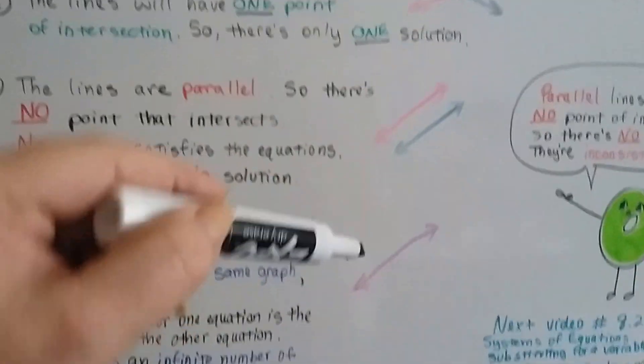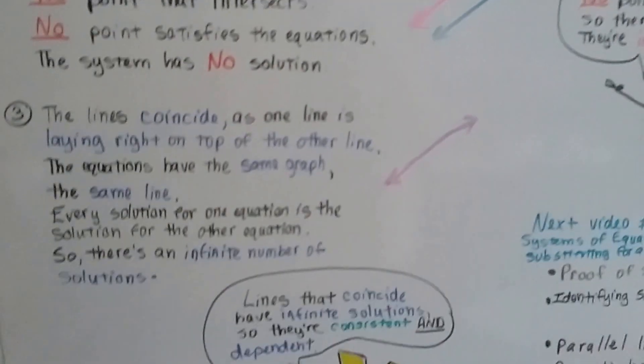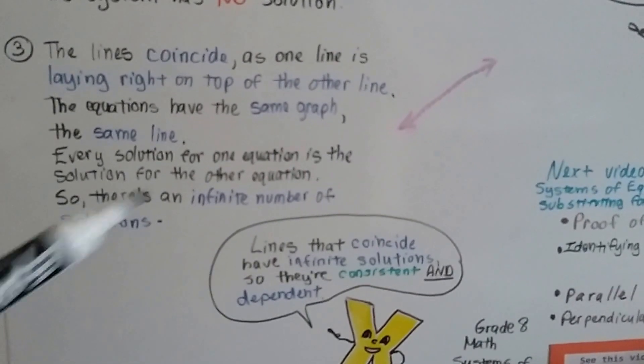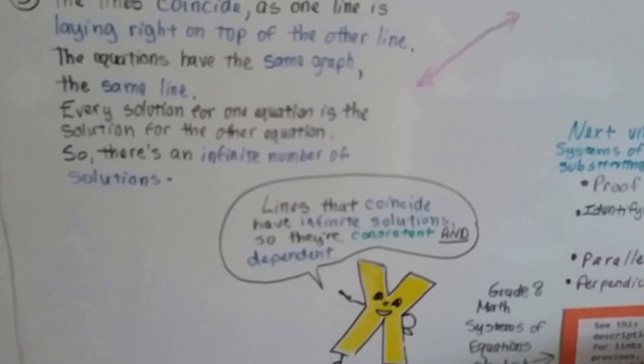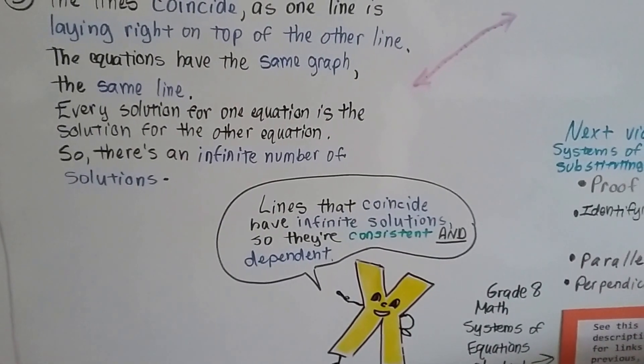So there's an infinite amount of solutions when they coincide. Every solution for one equation is a solution for the other equation. There's an infinite number of solutions. So lines that coincide, like this, have infinite solutions.